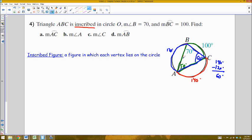One check for ourselves is that we know that the sum of the arcs within a circle is 360. And if I add 100, 120, and 140 together, I do get 360. So that's a check.